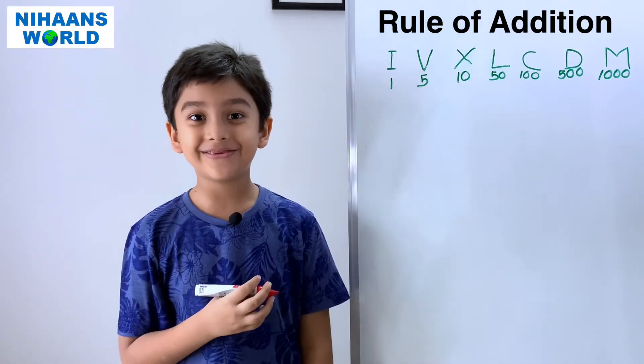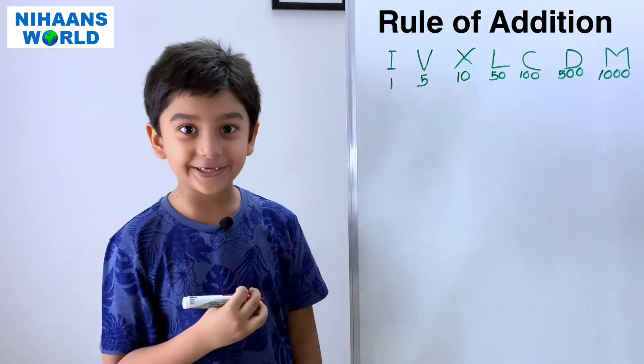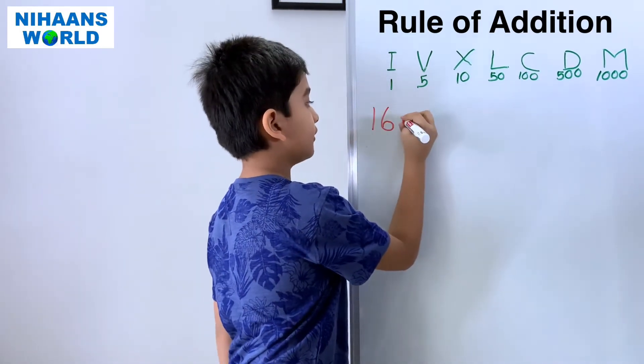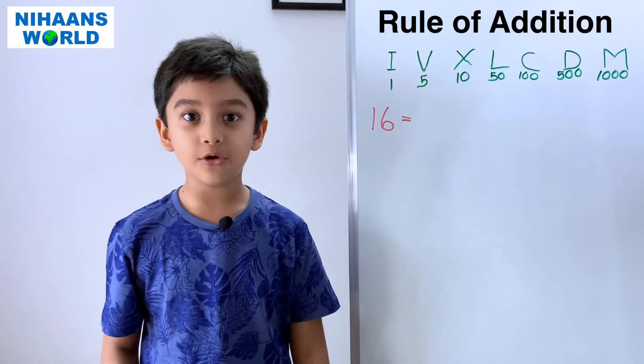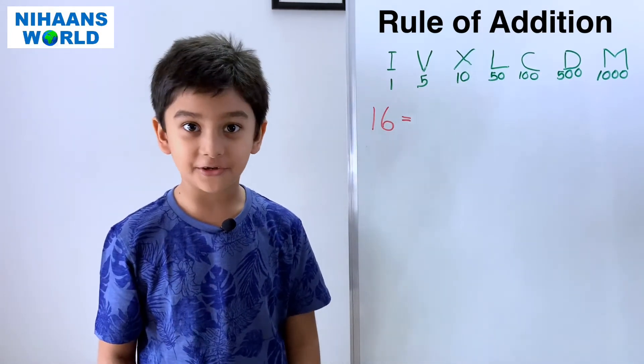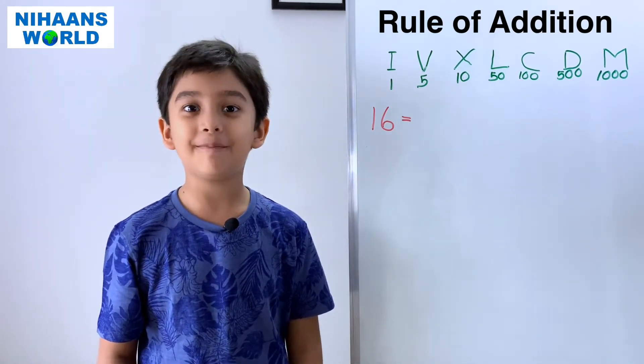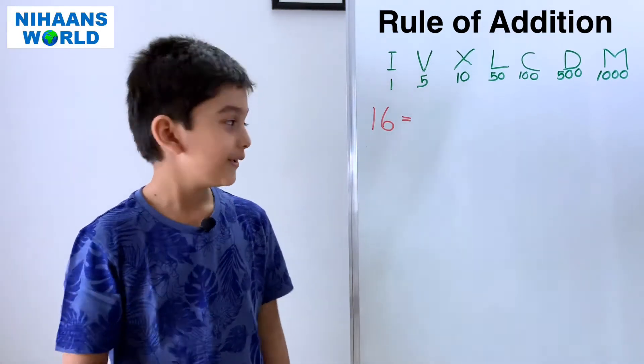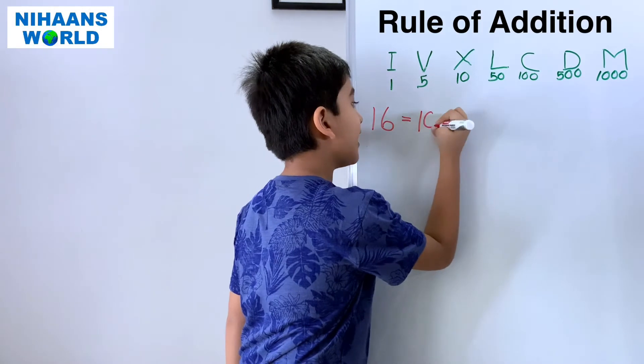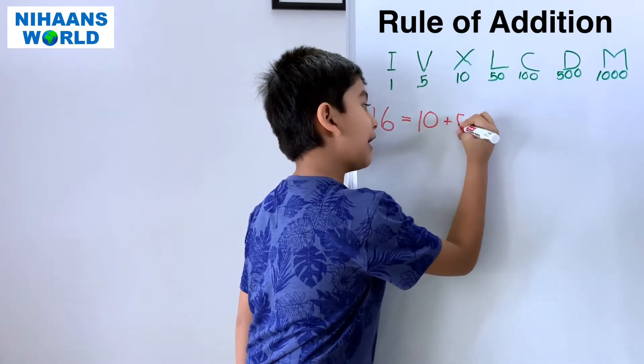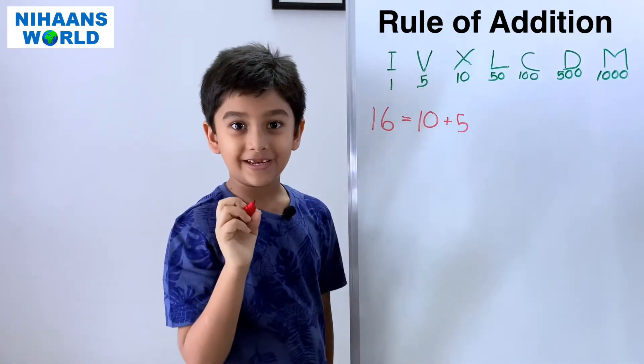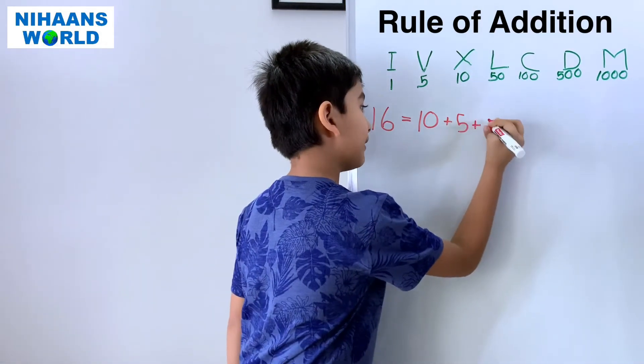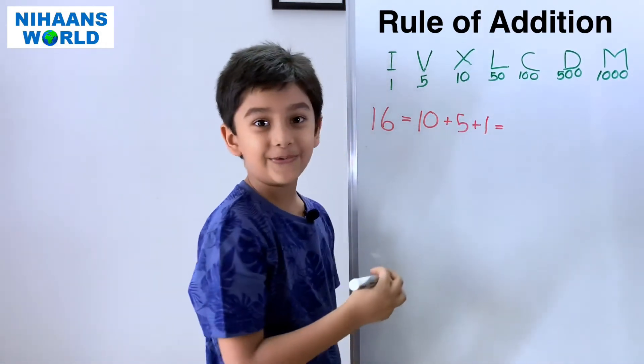Let's see the example of Rule of Addition. So, let us solve the example sixteen. So, this is Rule of Addition, not Rule of Repetition. Okay? So, we have remembered this. Let's start now. So, what is ten plus five? Fifteen. And we can add one.